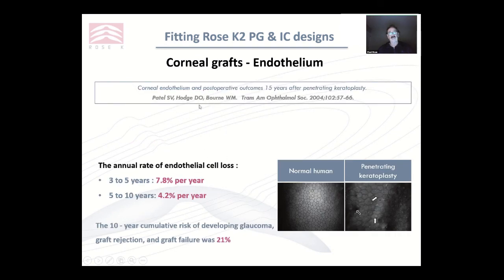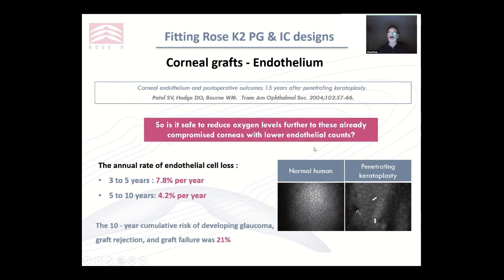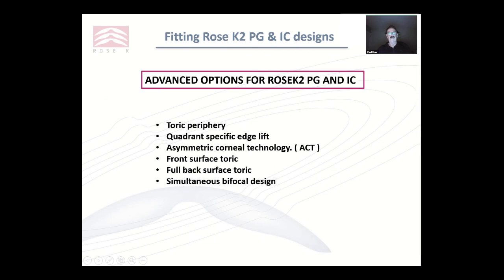Another study done for 15 years after penetrating keratoplasty found the annual rate of endothelial cell loss was about 8% a year in the first three to five years, then dropped to around 4% thereafter, meaning in the first ten years you had roughly a 21% chance of graft failure because of endothelial loss. So is it safe to reduce oxygen levels to these already compromised corneas with lower endothelial counts? Be very careful.